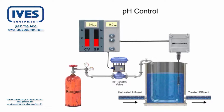Accurately applying the correct amount of reagent to an acid or base solution can be challenging due to the logarithmic characteristics of pH reaction in a solution. Implementing a closed-loop control system maintains the pH level within a certain range and minimizes the degree to which the solution becomes acidic or alkaline.